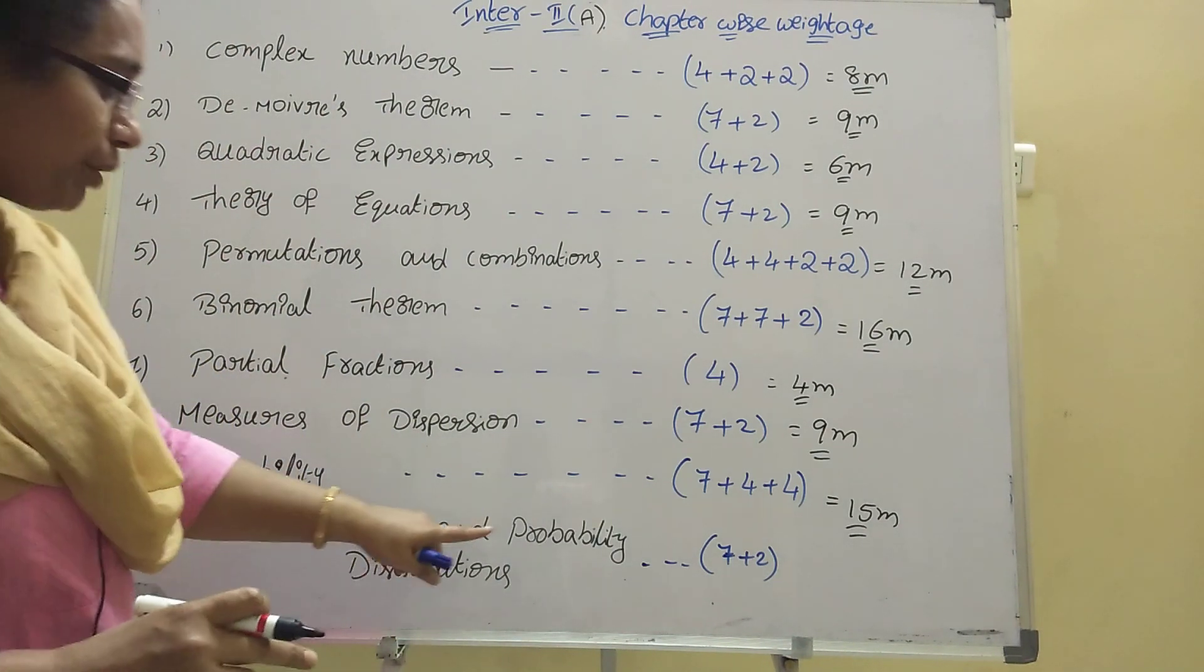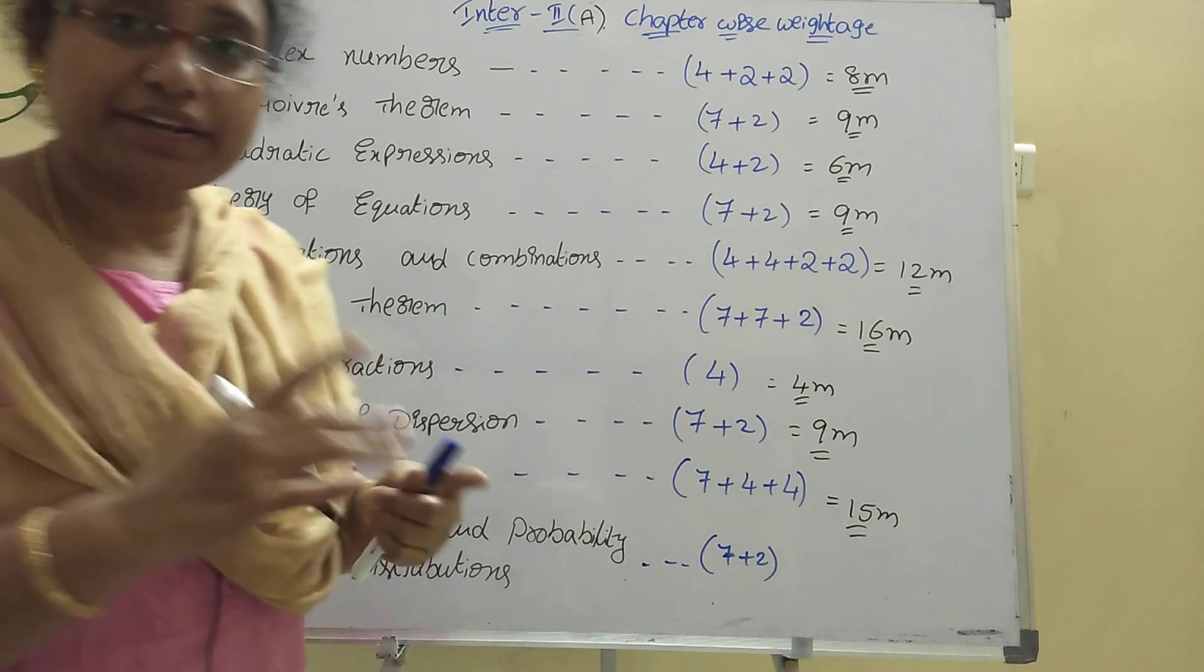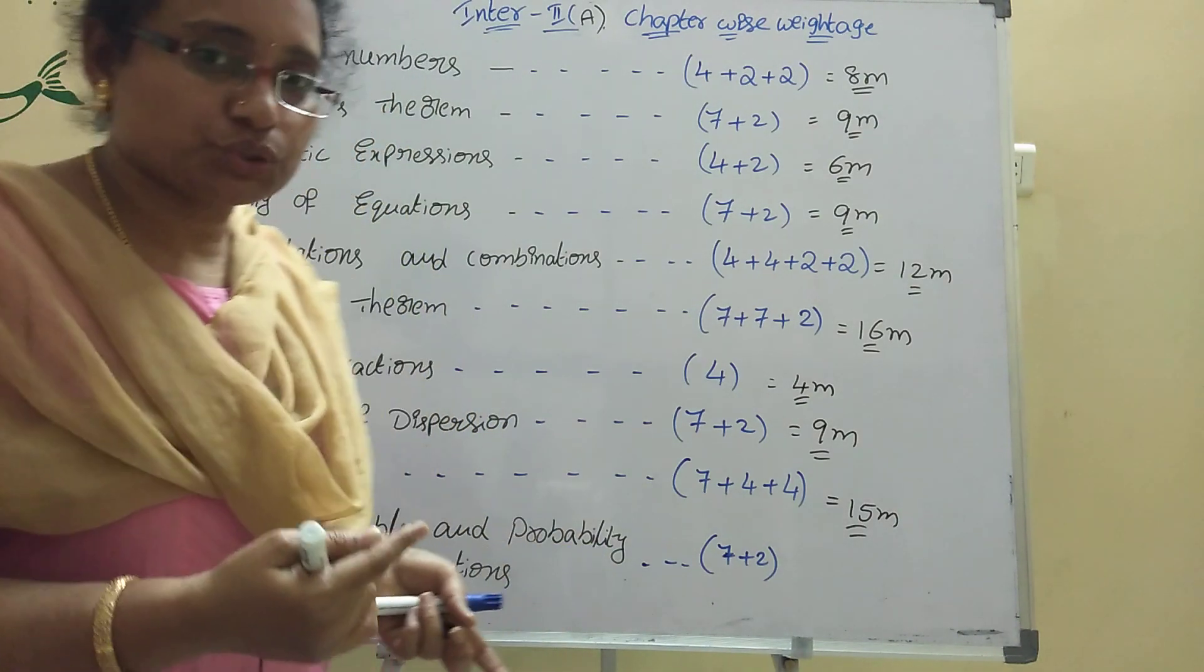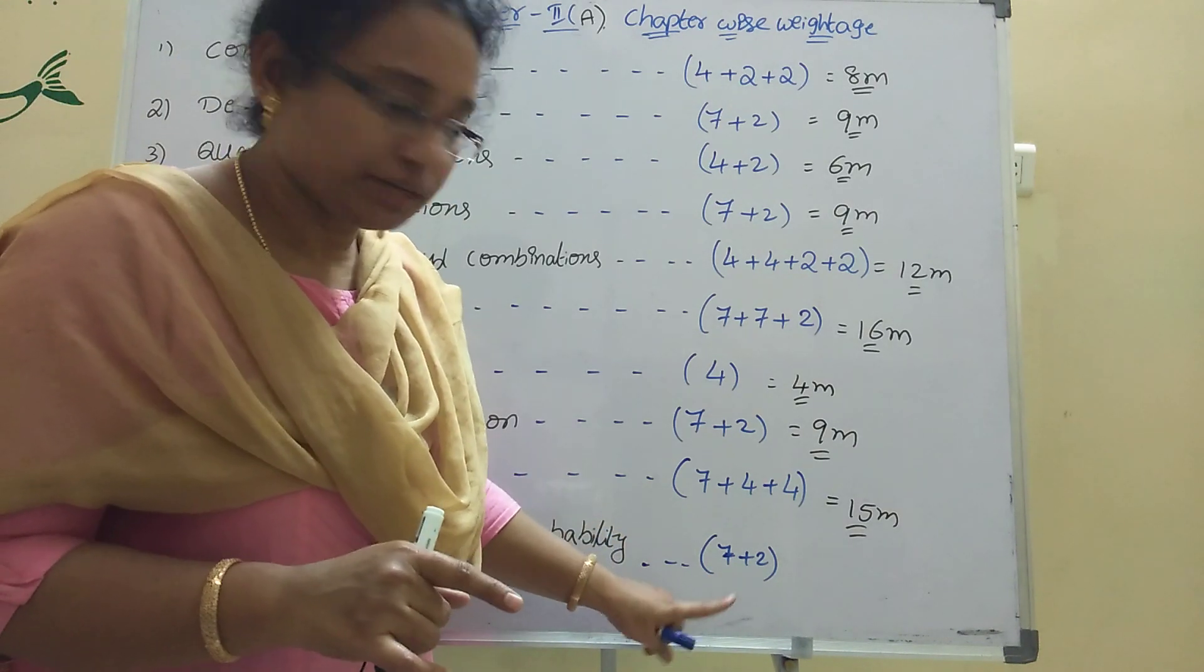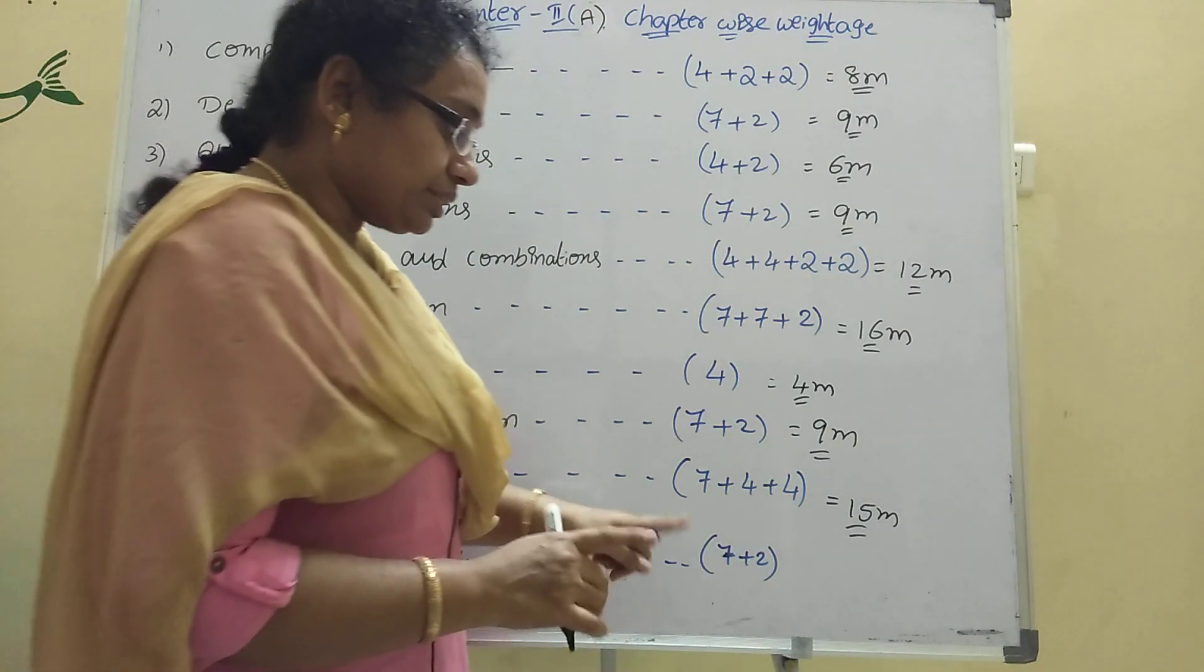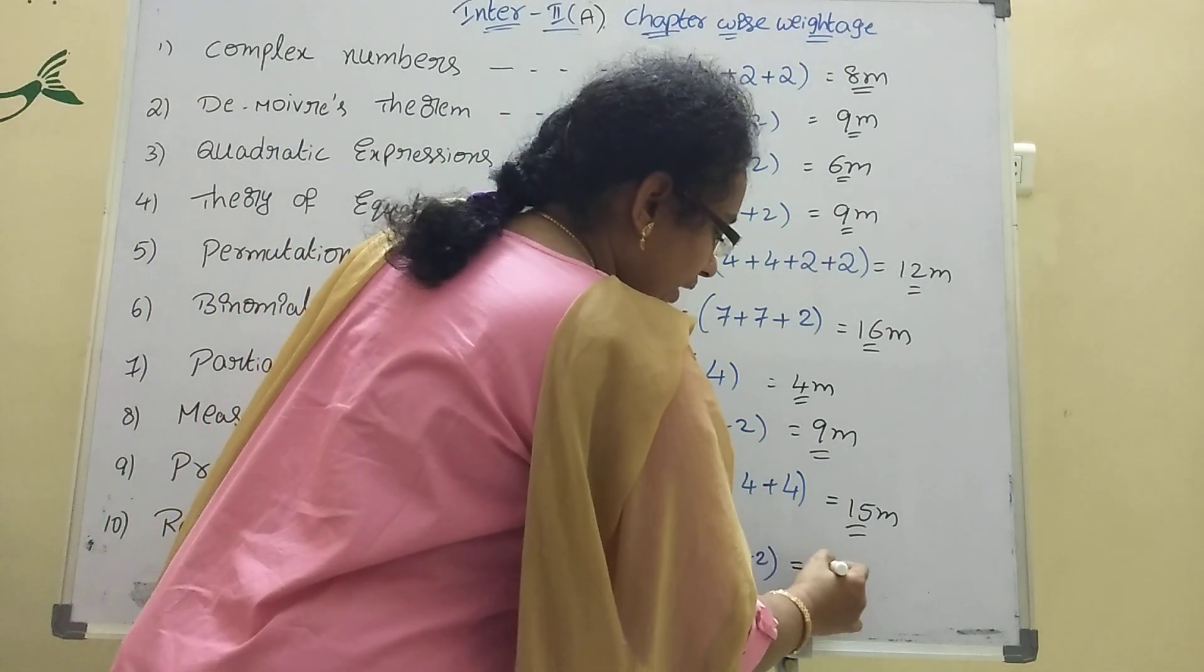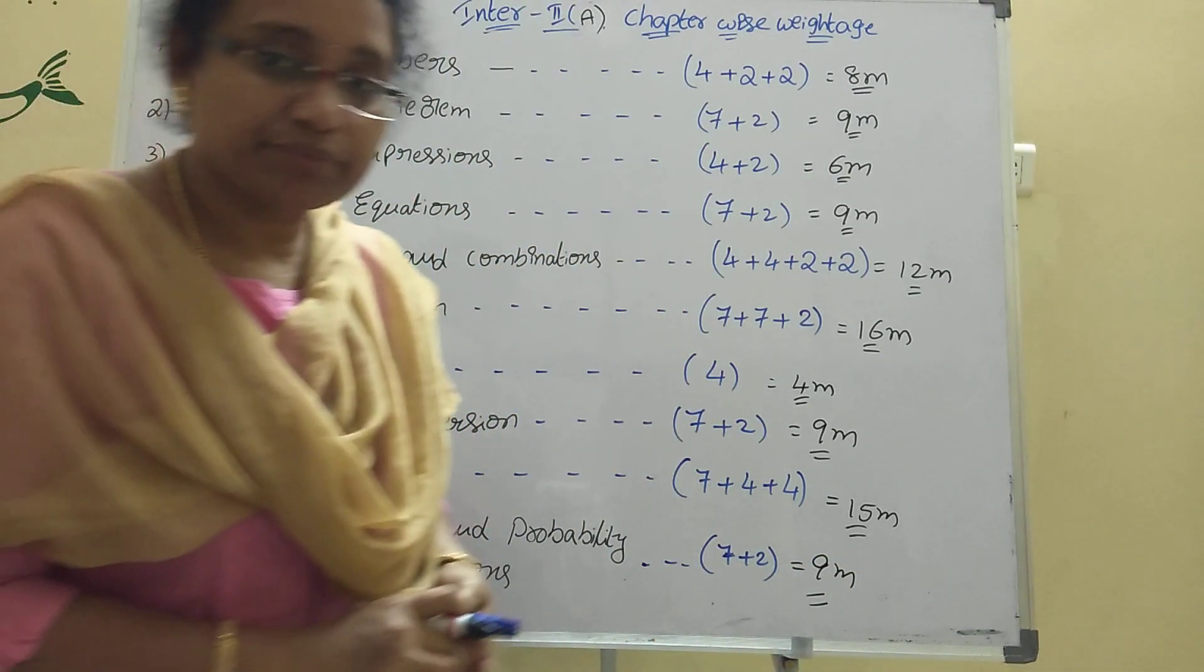Random variables and probability distributions: questions like sum of the probability equals k, find the value of k, mean. Last 7-mark, every 24th bit will be random variables only. Last 2-mark also, total 9 marks, 7 plus 2. This is the pattern, chapter-wise.